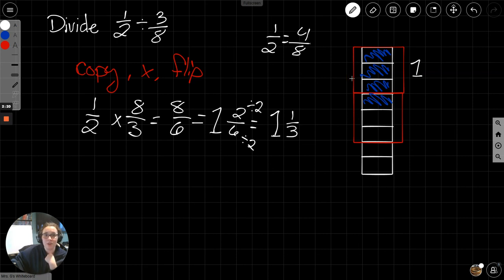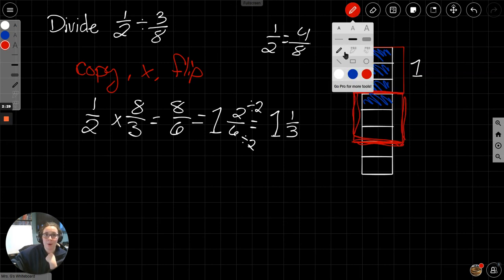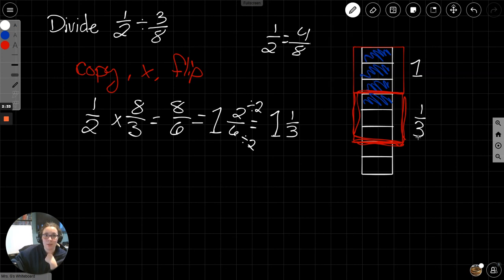Looking at what's inside the box here, we have 3 pieces and 1 of them is filled in. So this is 1 third. My answer is 1 and 1 third.